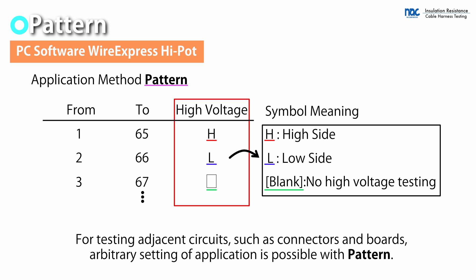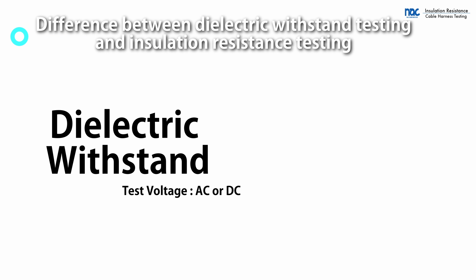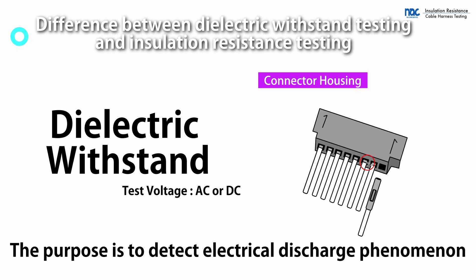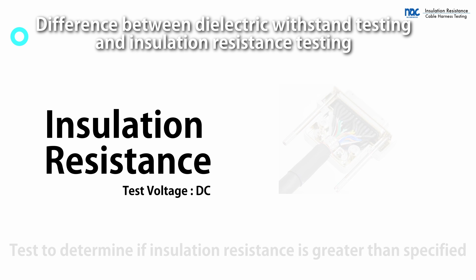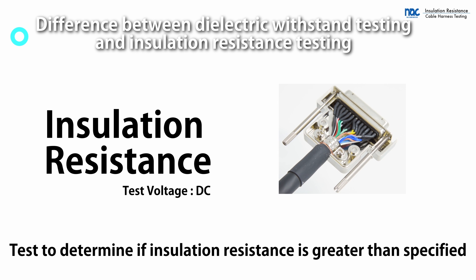When adjacent circuits are fixed, such as connectors and boards, the test can be conducted by the requested application. In dielectric withstand voltage testing, the discharge phenomenon is detected. Insulation testing measures insulation resistance and determines if the required value is exceeded.